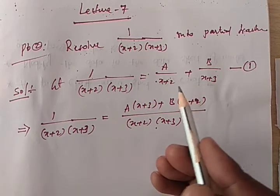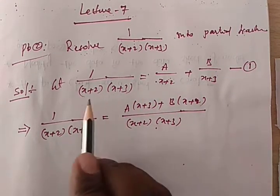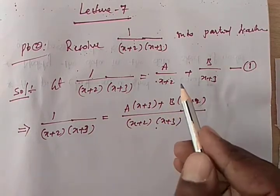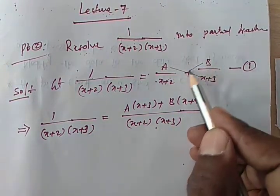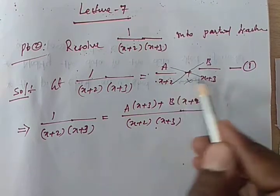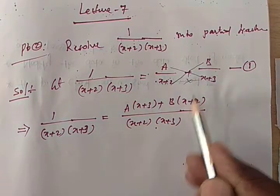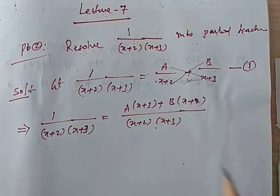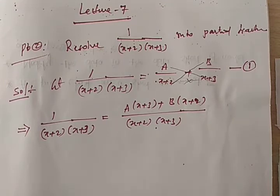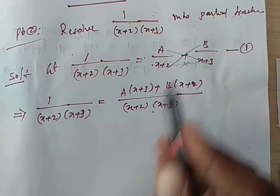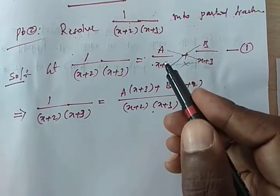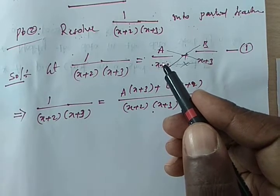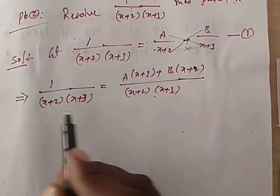For a Type 1 proper fraction with two distinct linear factors in the denominator, we can write easily: A times the other denominator plus B times the other denominator, all divided by the product of the two. So A(x+3) + B(x+2) divided by (x+2)(x+3). This method applies only to Type 1 proper fraction problems — it does not work for other types. Always find the LCM first, then take the quotient and multiply with A or B accordingly. Since both denominators are now the same, we can cancel them.